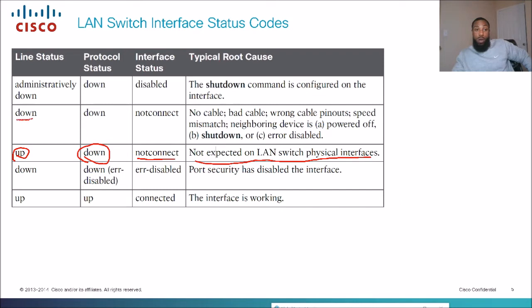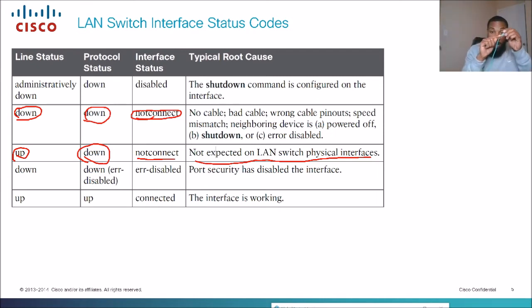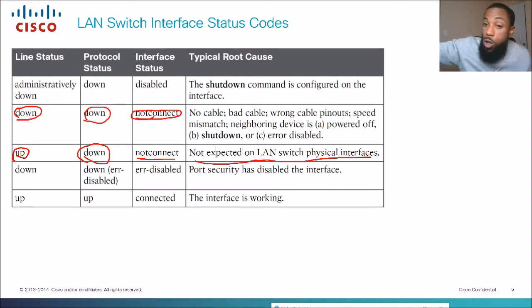When layer one is down and layer two is down, the status is not connect. This basically means no cable, bad cable, or wrong cable pinouts — if the individual cables inside are flipped wrong or assembled incorrectly, you'll see not connect.